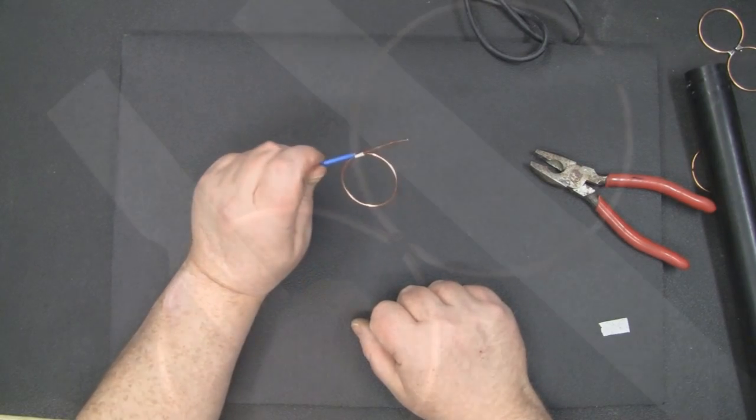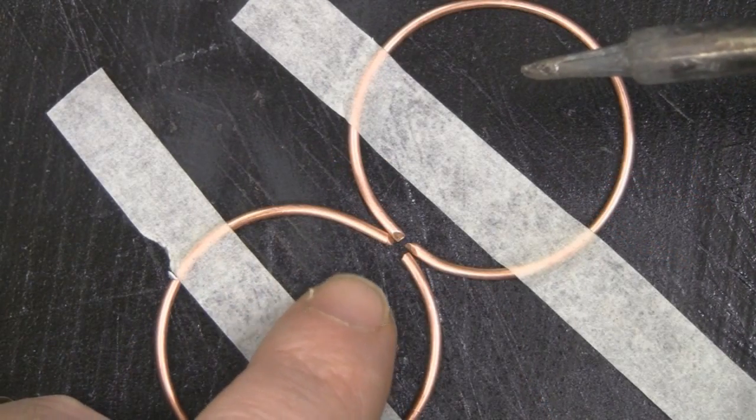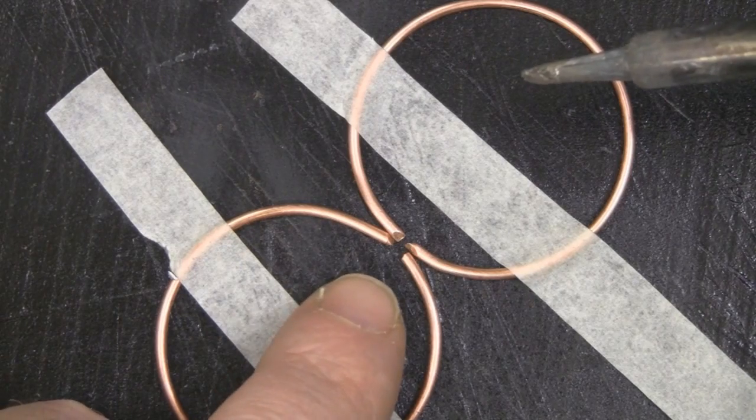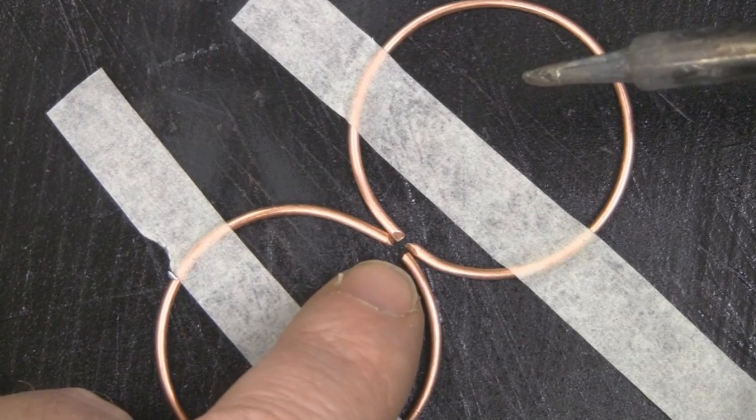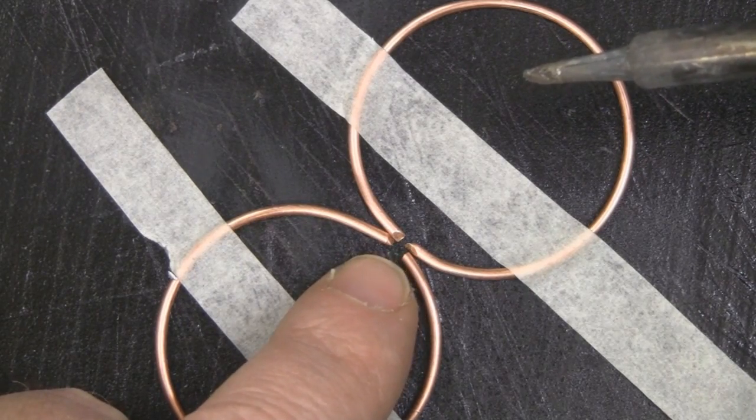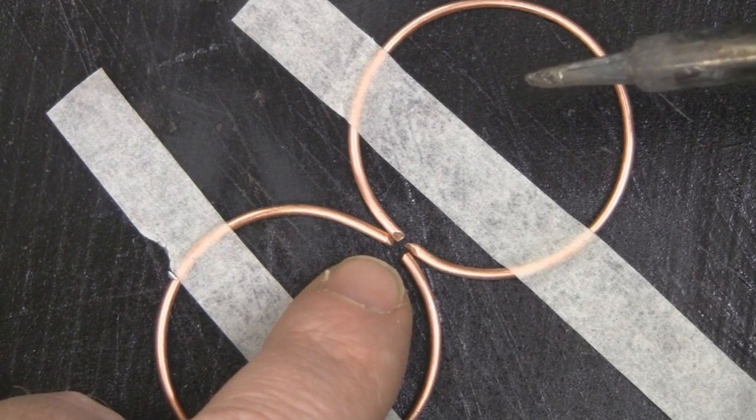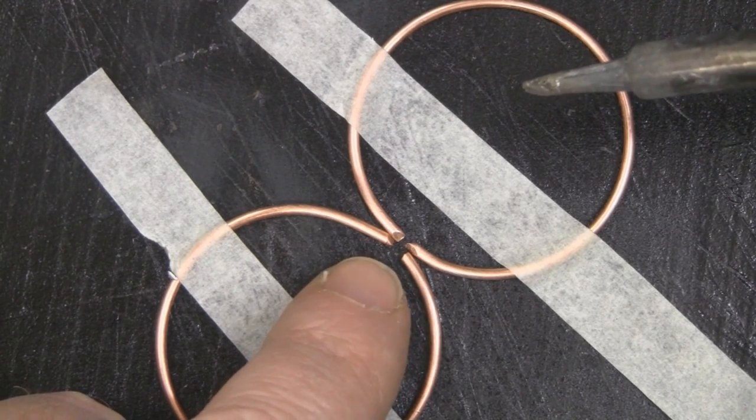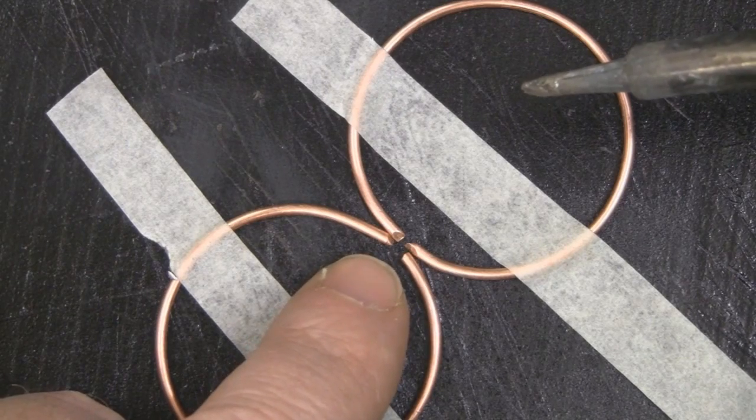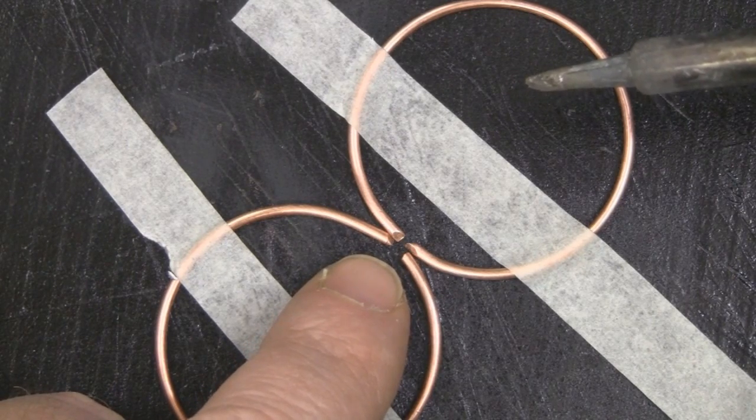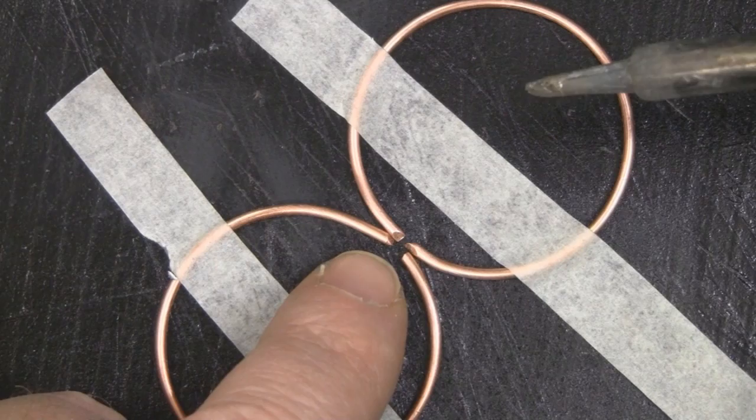I'm now going to solder both elements together. I'm just holding them down with some masking tape. The gap between here wants to be around two millimeters. What I like to do is solder it all in place first and then tidy that gap up to two millimeters with the Dremel tool. I find it much easier to do it that way.